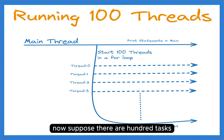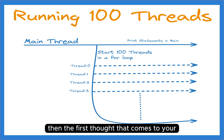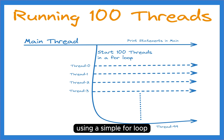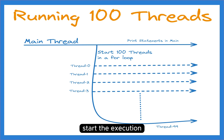Now suppose there are 100 tasks that you need to perform concurrently. If you do not use any framework to handle thread pool or lifecycle, then the first thought that comes to mind will be creating 100 threads using a simple for loop. Inside that for loop, you can create those 100 threads and start their execution.